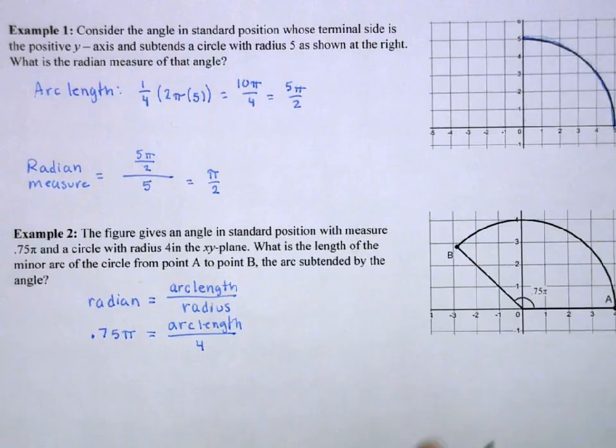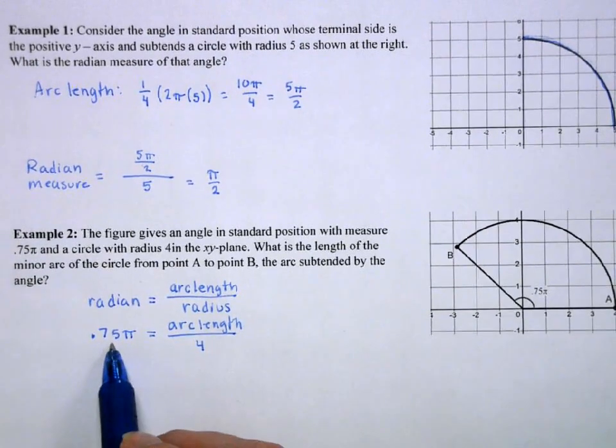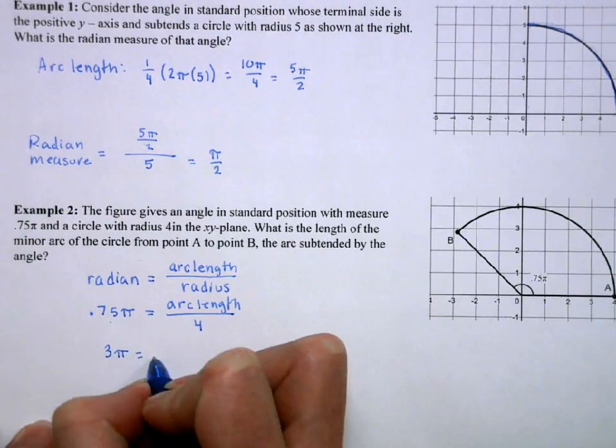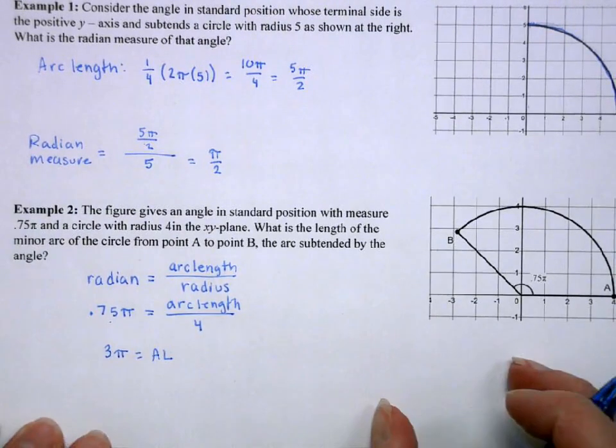So, I'm going to multiply 0.75, which is 3 fourths, times 4, which is going to give me 3π. That's going to be my arc length.